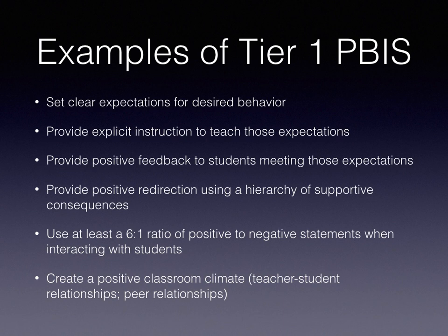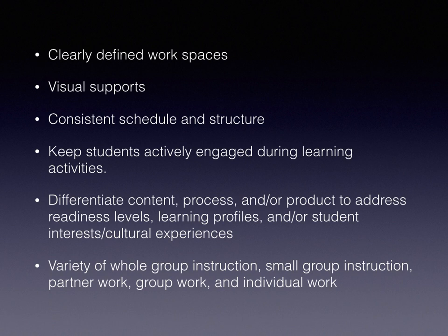When students aren't meeting expectations, it's important to provide positive redirection using a hierarchy of supportive consequences. Other examples of Tier 1 PBIS include creating a positive climate with positive teacher-student and peer-to-peer relationships, clearly defined workspaces, visual supports to help students understand behavioral expectations, a consistent schedule and structure students can trust to feel comfortable, and keeping students actively engaged during learning activities.